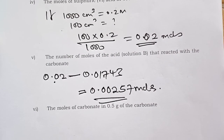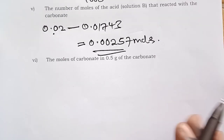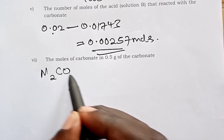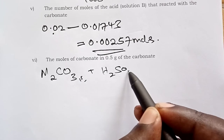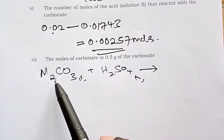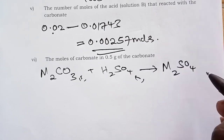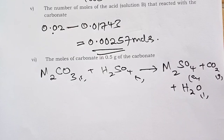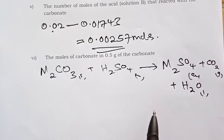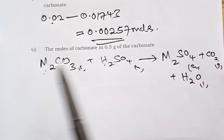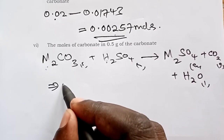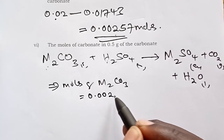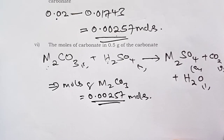Now calculate moles of carbonate in 0.5 grams of M₂CO₃. The equation for the reaction is: M₂CO₃ + H₂SO₄ → M₂SO₄ + CO₂ + H₂O. This is already balanced, giving a mole ratio of acid to carbonate of 1:1. Therefore moles of M₂CO₃ = moles of H₂SO₄ that reacted = 0.00257 moles.